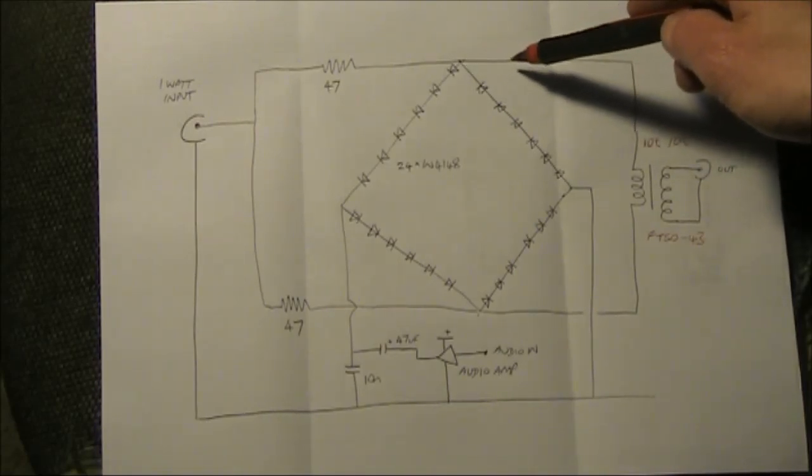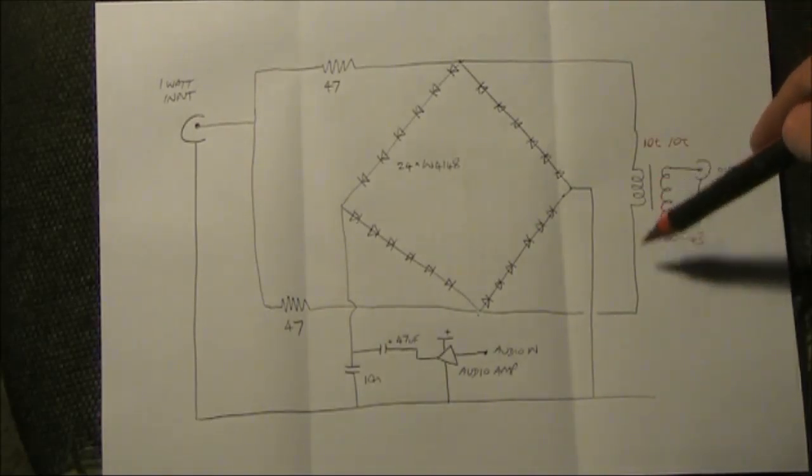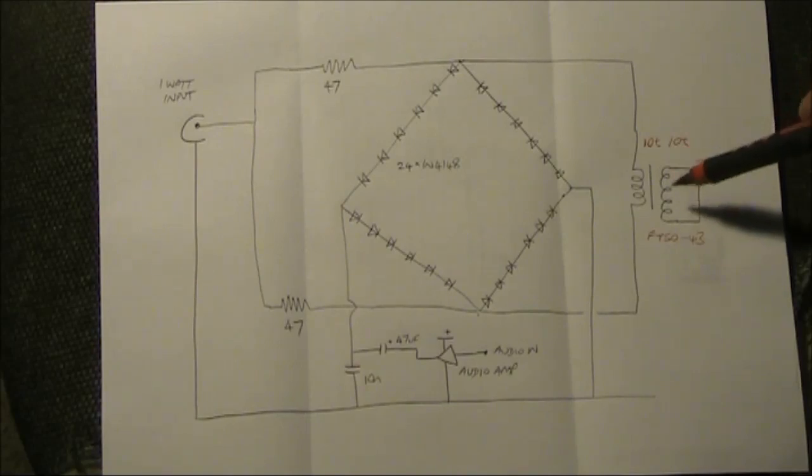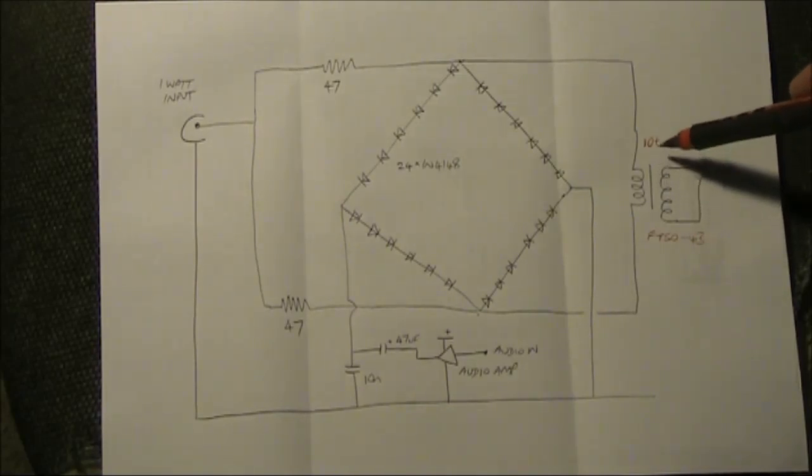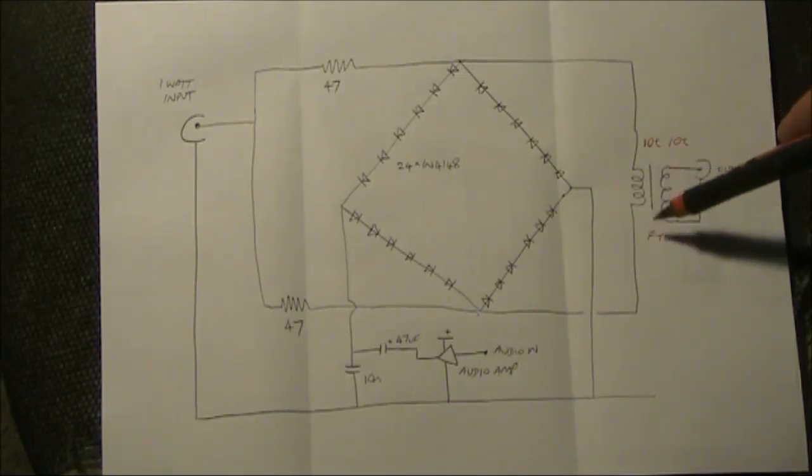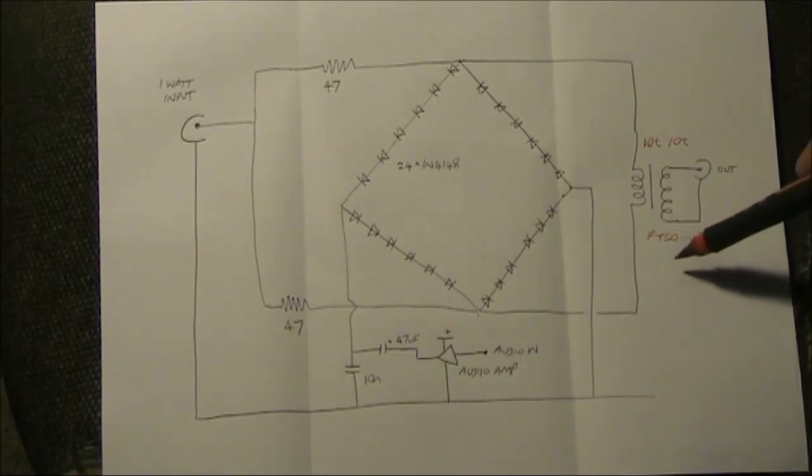And that's the same point at which your output signal is taken off. That is taken off via a ferrite toroid, a FT50-43.